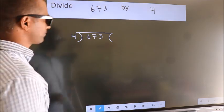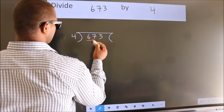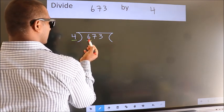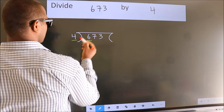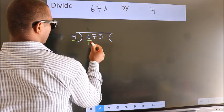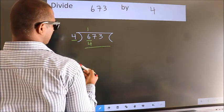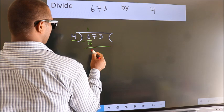Next, here we have 6, here 4. A number close to 6 in the 4 table is 4 once, which is 4. Now we should subtract. We get 2.